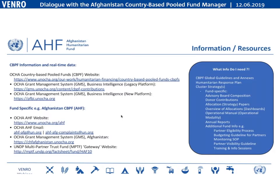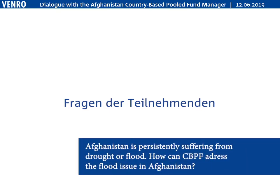Question: Afghanistan persistently suffers from drought and flood — how can CBPFs address the flood issue? Afghanistan is certainly a country persistently suffering from both environmental and conflict-related challenges. Country-based pool funds support building population resilience and sustainable solutions to persisting issues such as drought and flood. Allocations in Afghanistan last year addressed both the immediate humanitarian impact of drought and started to fund what we call sustainable solutions to address underlying issues.